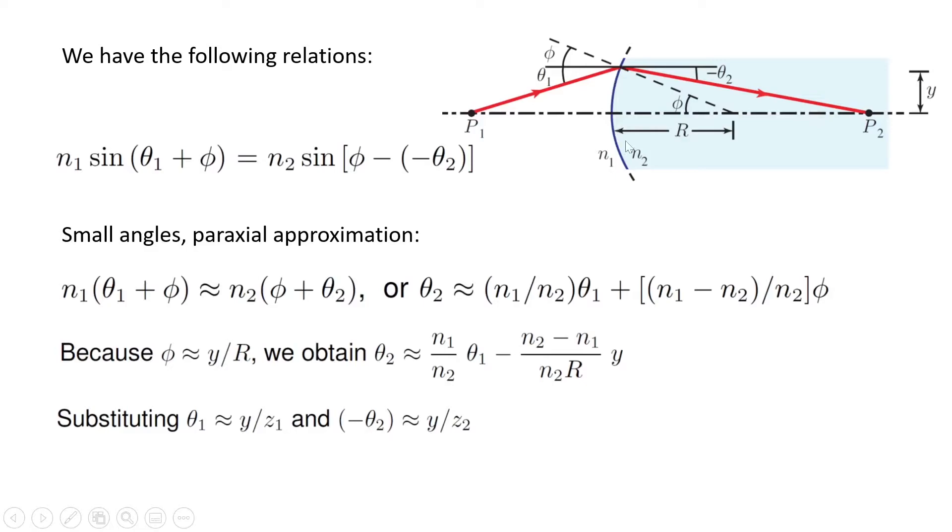Also, angle theta 2, minus theta 2, is almost equal to y over z2. z2 is the distance between the boundary and point P2. So this is angle minus theta 2, which is equal to this one, and the distance is z2, and the height is y.